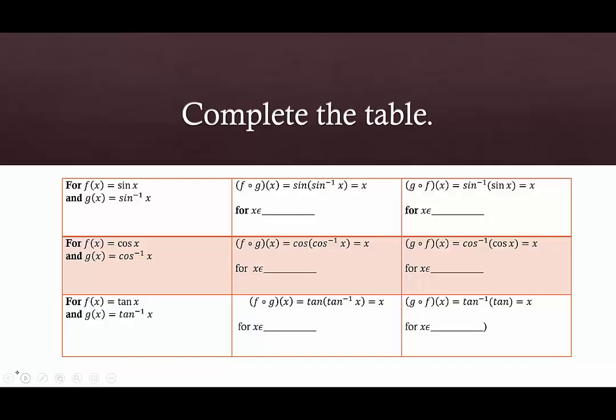Two tables we want to keep in mind before we get started. The first one is the allowable domain and range for our arcsine, arccosine, or arctangent. So f of g of x equals sine of sine inverse of x. The domain here is going to be defined by the domain of sine inverse of x, which is any x value between negative 1 and 1. If we do the reverse, sine inverse of sine of x equals x, because those are inverse functions, then the domain is defined by the range of our arcsine, which would be from negative pi over 2 to pi over 2.